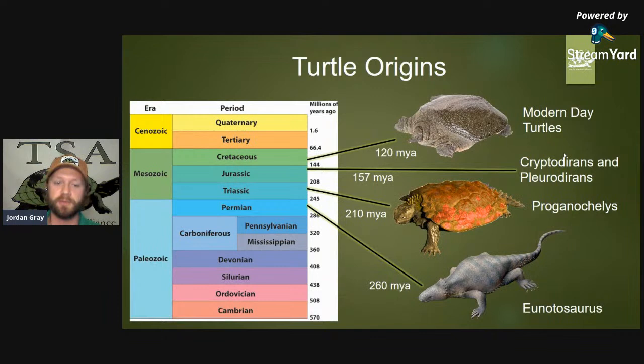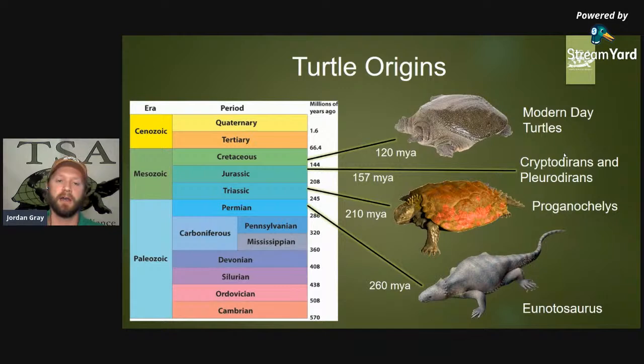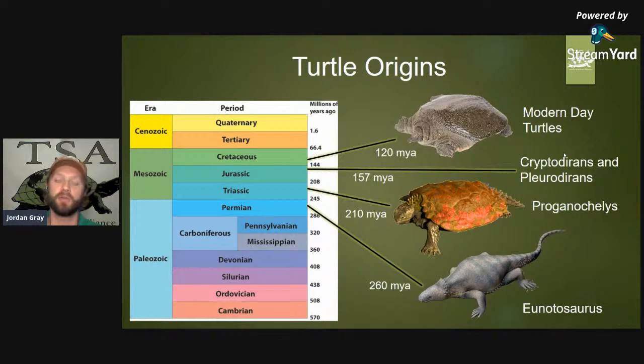The first reptiles started coming about during the late Carboniferous and early Permian, and there was major reptile evolution during the Triassic, Jurassic, and Cretaceous ages. The turtle is one of the oldest forms of reptile on earth. The divergence between cryptodires and pleurodires began happening about 157 million years ago.